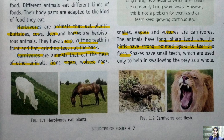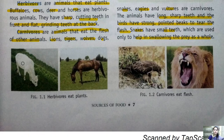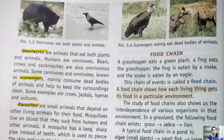Birds have a strong pointed beak to tear flesh. Snakes have small teeth used only to help in swallowing prey whole — they don't chew or tear; they just engulf it. So the key point for carnivores: they are flesh-eating animals. Examples: lion, tiger, vulture, wolf. Animals have long sharp teeth, birds have strong beaks, and snakes have small teeth for swallowing.